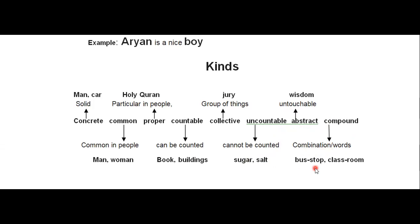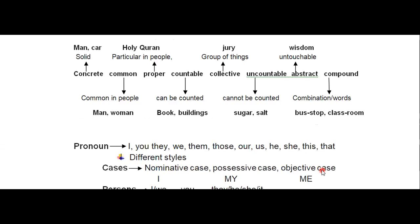The last kind is compound noun — combination of two or more words, such as bus stop, classroom, shopkeeper. As discussed in our punctuation class, a hyphen is used to join two words. These are called compound nouns. The examiner may not ask you to separately identify compound, common, or proper nouns, but for your identification — when fill-in-the-blanks or synonyms come in papers — you should be able to identify whether a word is a noun, adjective, or adverb.